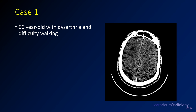Looking at the gray-white differentiation, I see gray matter kind of coating the white matter, except for maybe over here in the right frontal lobe — I see a little bit of diffuse hypodensity, maybe a little bit of loss of gray-white differentiation there.